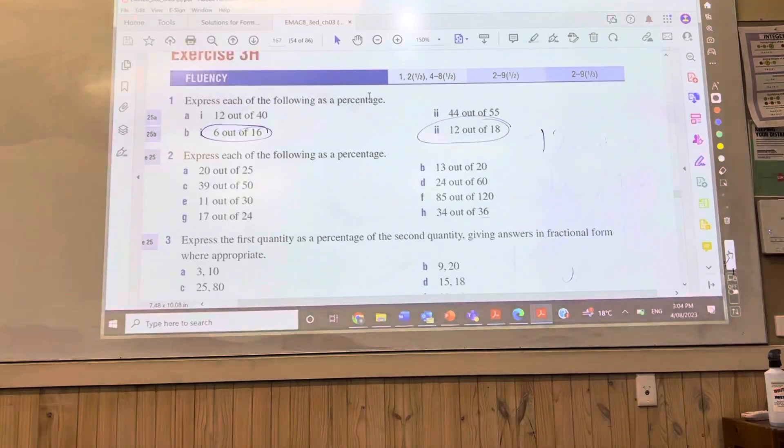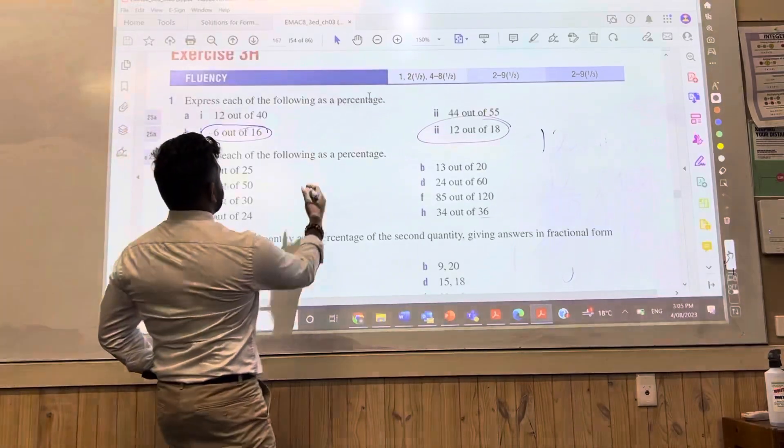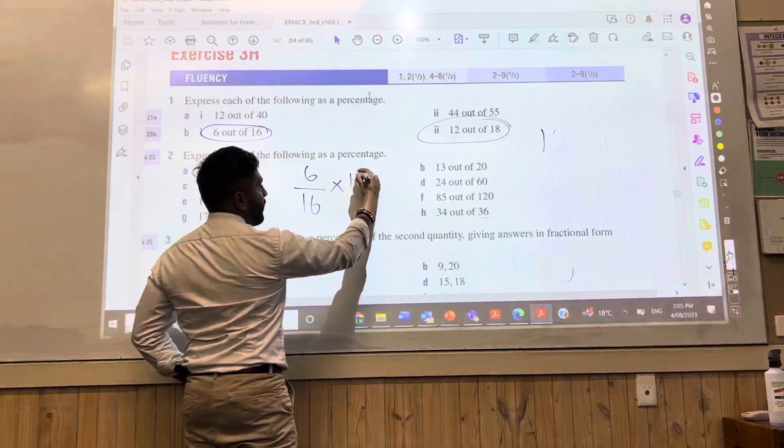Alright guys, come on, have a go. You have about, it's 3:04. I'm going to give you about a minute and a half. I'm going to start this first one. 6 out of 16. Times by 100.